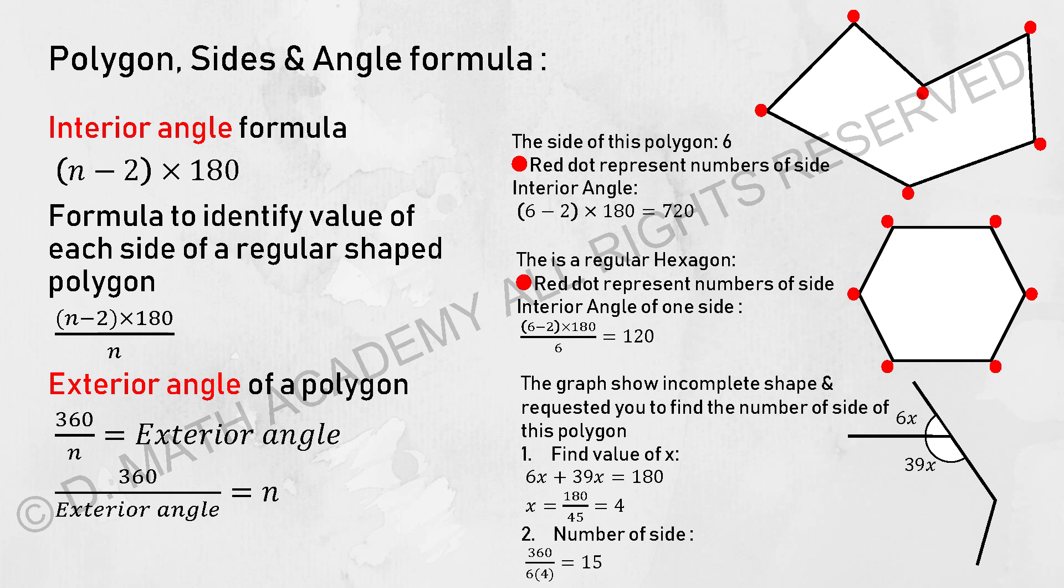As for exterior angle of a polygon, things to take note is all the exterior angles of the polygon you add it up, it will be resulting in 360. Hence, dividing it with n, you will get the exterior angle.